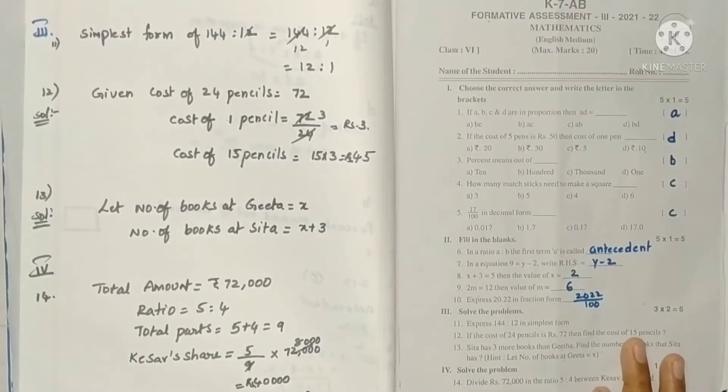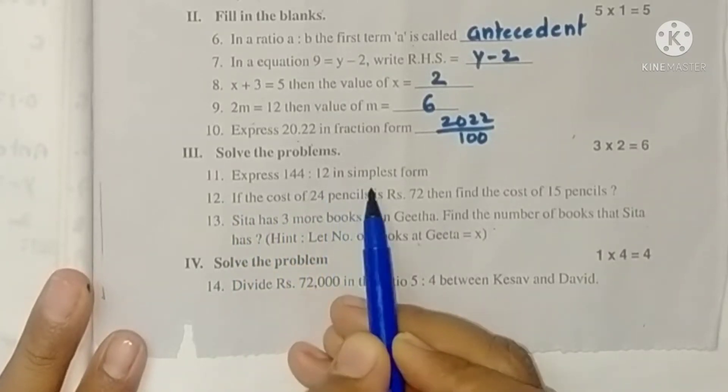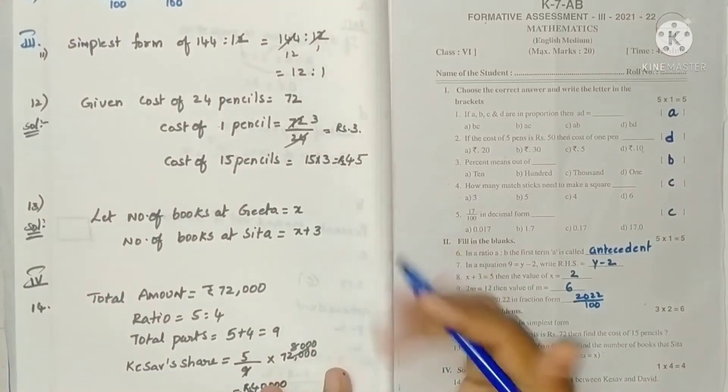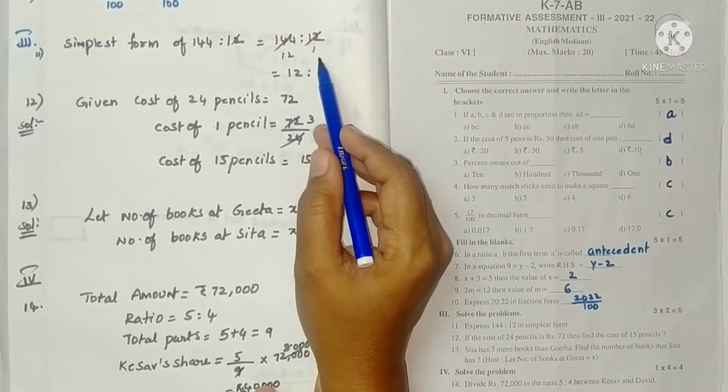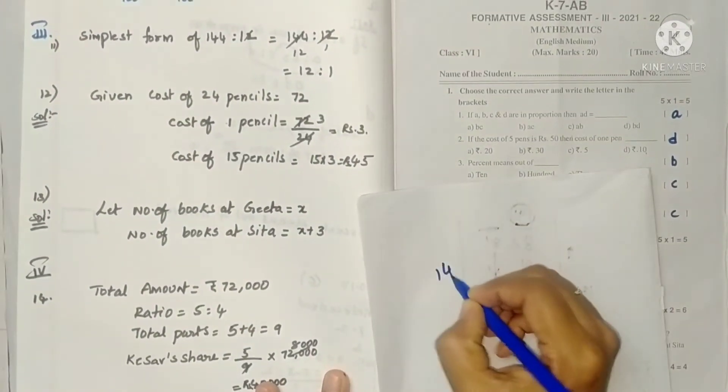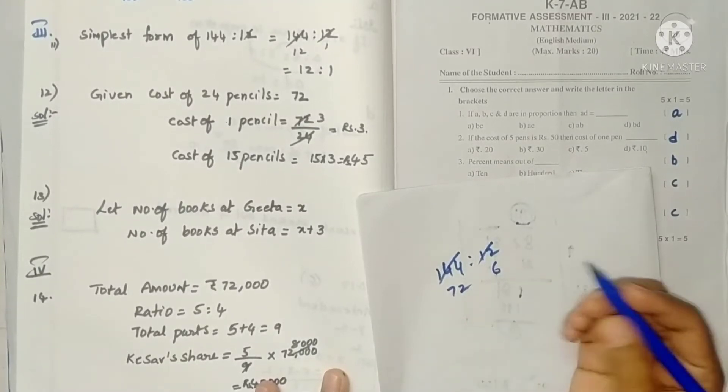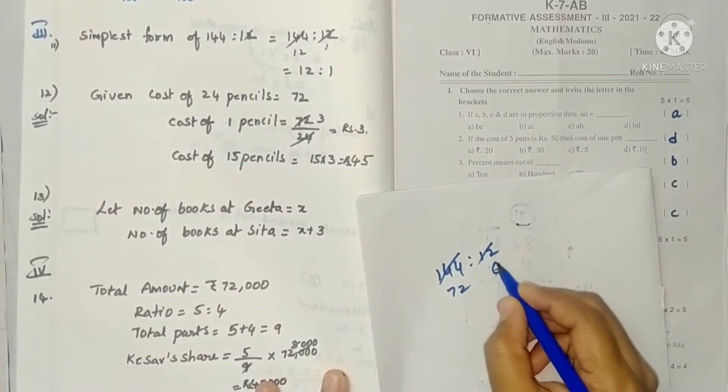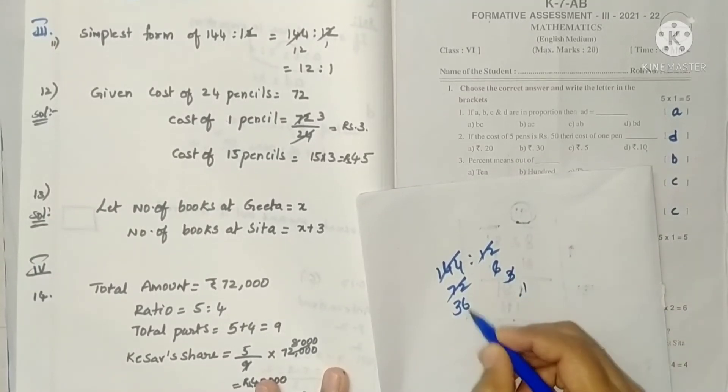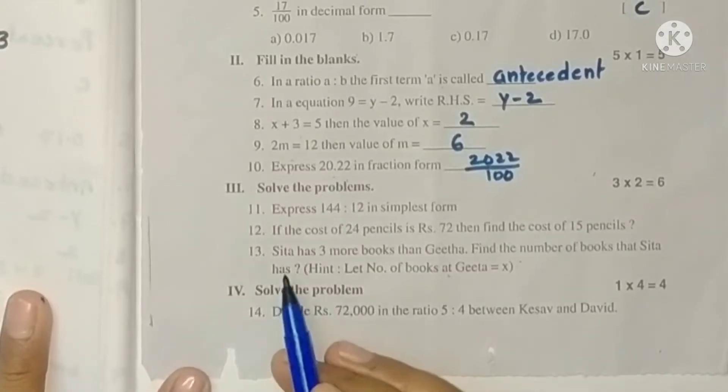Next, Roman 3. Express 144 is to 12 in simplest form. We find the common factor and divide by it. So 12, 12 into 144. You can calculate using tables: 2 sixes, 2 sevens, 2 twos. Again 2 threes, 2 threes, 2 threes. So it is 12 is to 1.